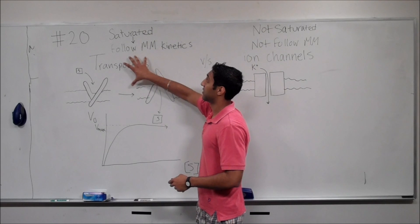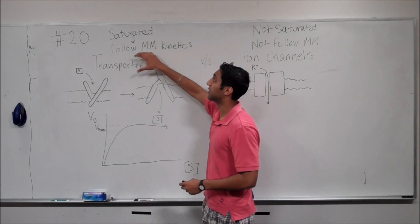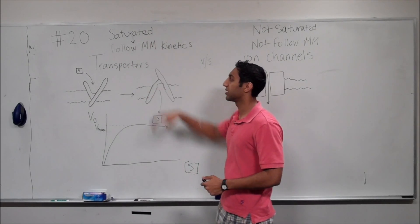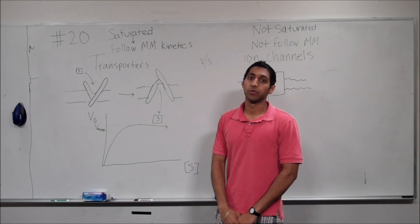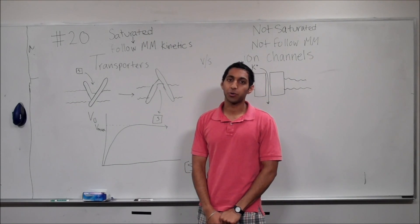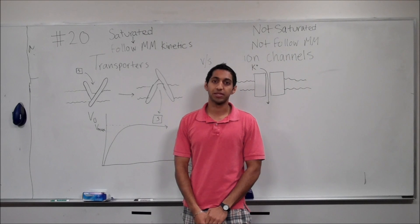You would want to be able to have it go slow and have it become methodically regulated. Which, as a result of that, they follow Michaelis-Menten kinetics because they get saturated. So, those are the differences between transporters and ion channels. Hope that helps, guys.